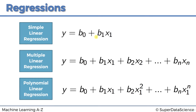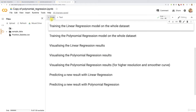We're simply about to build this one, because we have only one feature, which is the position levels, and the dependent variable, which is the salary to predict. Then we'll implement the polynomial regression model with a number of powers of that same position level feature. So let's do this, starting by creating a new code cell.